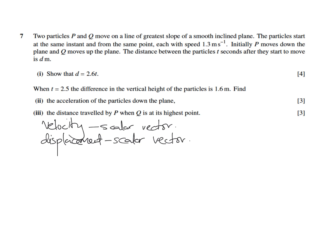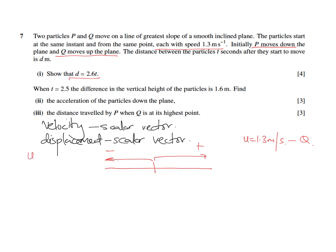Based on that, in this question each particle has a speed of 1.3 m/s. P moves down and Q moves up. Drawing on a straight line, if Q is moving up to the right, towards right is positive and towards left is negative. So the initial velocity U for Q is positive 1.3 m/s, and for P it is negative 1.3 m/s because it is moving towards the left.